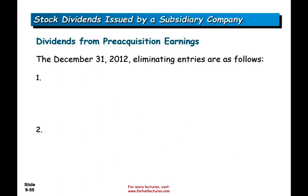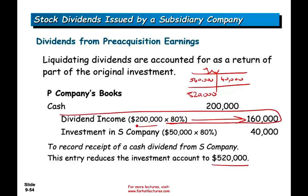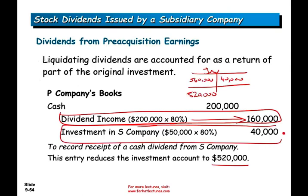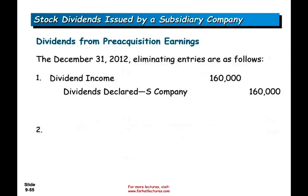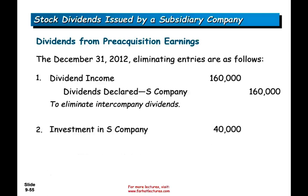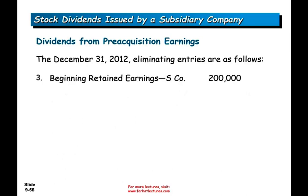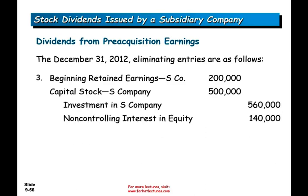Now we prepare eliminating entries at the end of the year. First, we eliminate intercompany dividends: debit dividend income $160,000 and credit dividend declared by S company. Then we reverse the $40,000 entry: debit investment in S company $40,000 and credit dividend declared $40,000 to reverse that entry. We also eliminate the equity accounts for the sub: debit retained earnings $200,000, debit capital stock $500,000, credit the investment account $560,000, and credit non-controlling interest $140,000.